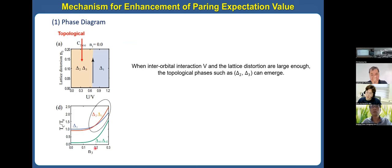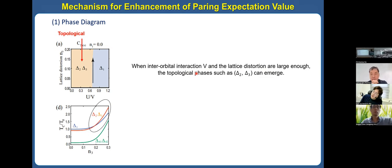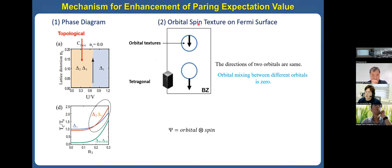Looking at the phase diagram one more time: the x-axis is the lattice distortion N3, and the y-axis is the critical temperature along the black arrow. When U is very large, as lattice distortion N3 increases, the critical temperature increases. Also, the unconventional or topological phases Δ₂ and Δ₃ overcome Δ₁. When both interorbital interaction V and lattice distortion are large enough, topological phases Δ₂ and Δ₃ can emerge. This is the result.